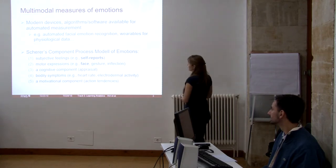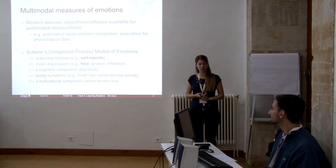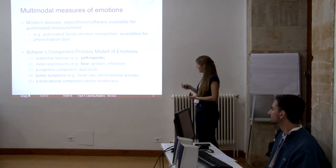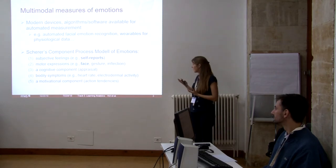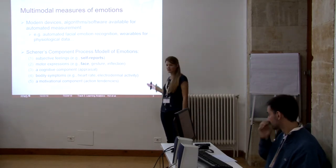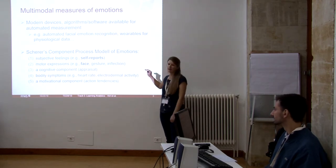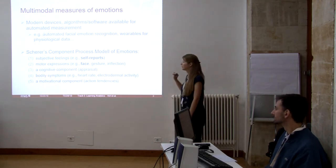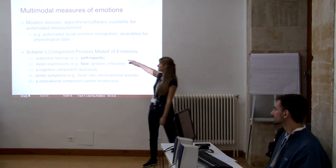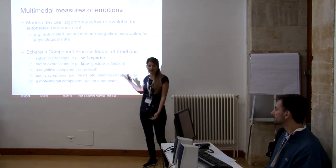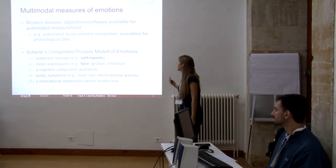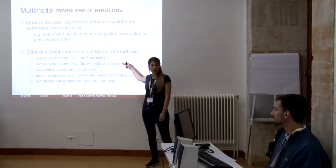However, we don't really know very well what we actually measure with those tools. In the theory of emotions, as proposed by Scherer, emotions are really fluid and global. Scherer proposes that there are five different components of emotions, and subjective feelings are just one of them. So if we measure emotions via self-reports, we actually just measure this first component, but the other components are equally valid components of emotions. Facial expressions, for example, would be a different component.